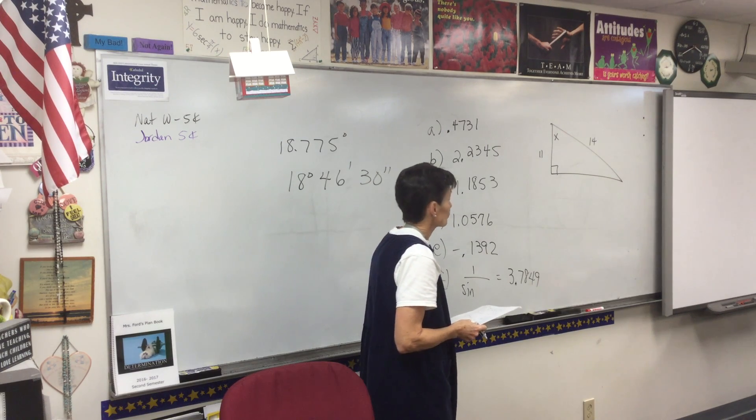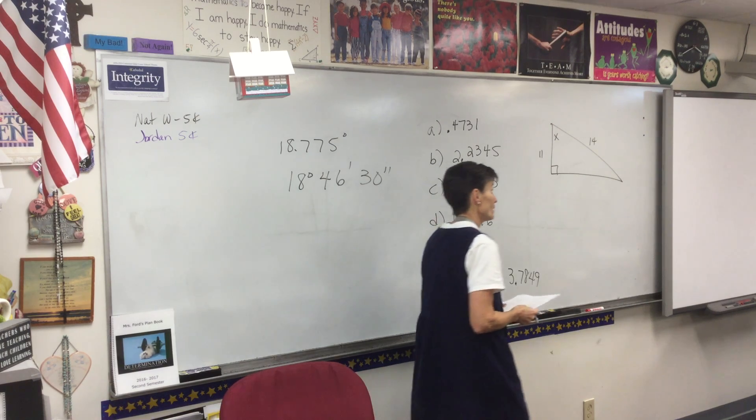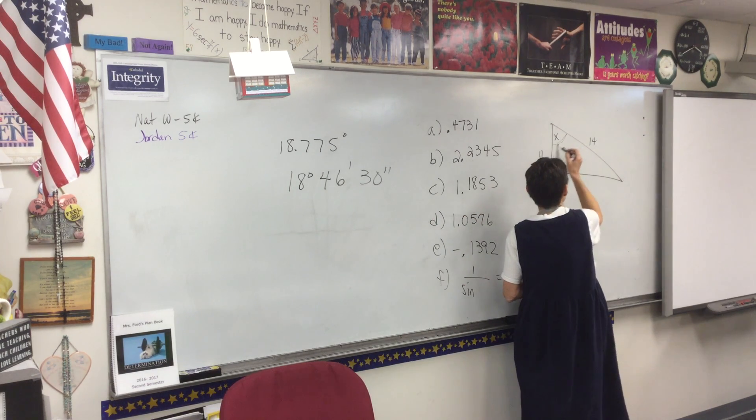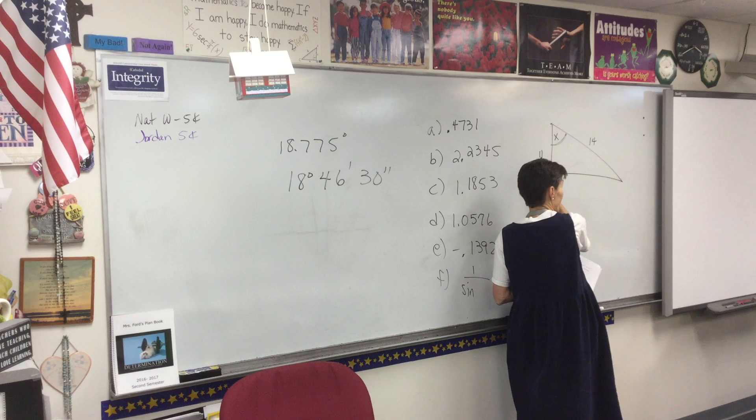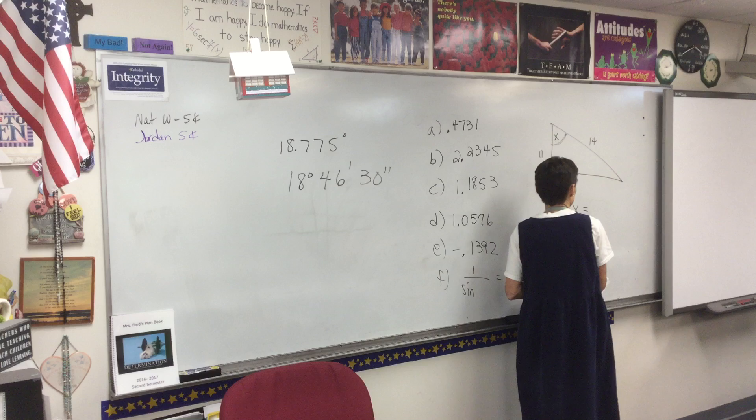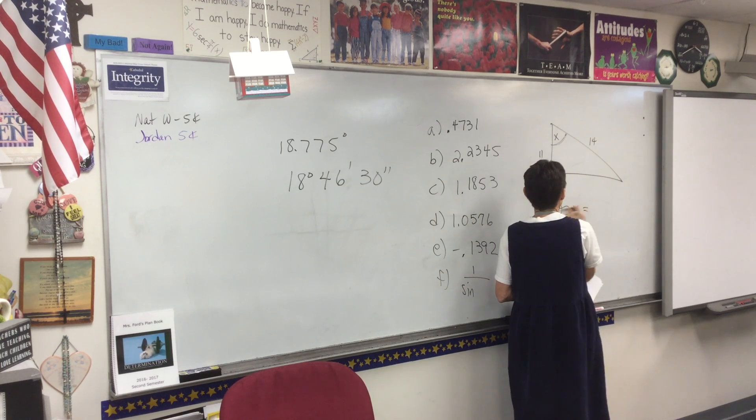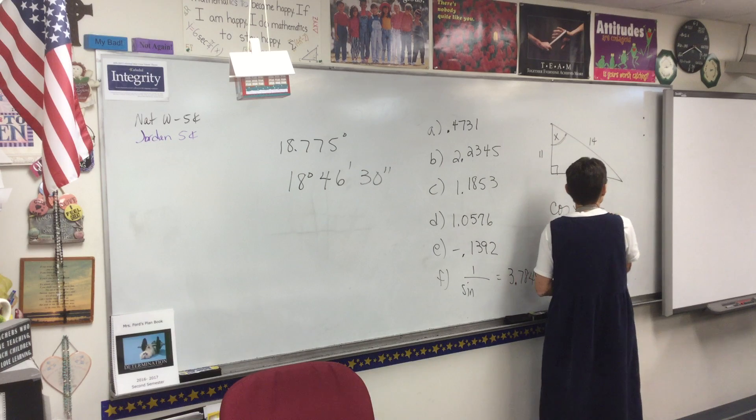Cosine, won't it be cosine? Look, this is your angle, kids. Isn't this the adjacent side? Yeah. So cosine x, remember, the angle has to be hooked to the cosine. So cosine x equals 11 over 14.